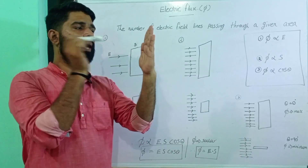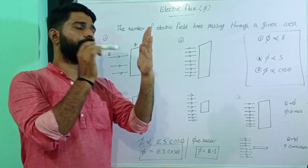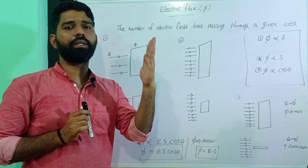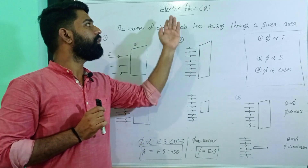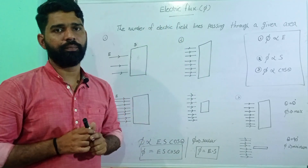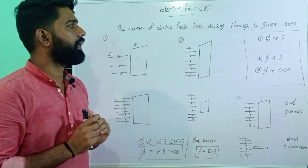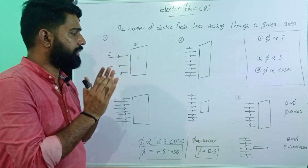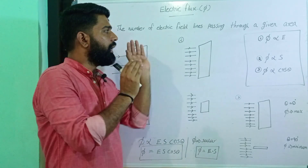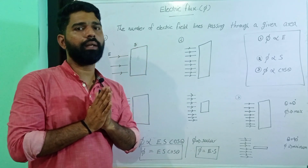We have a total number of electric field lines — we have a flux, electric flux. This is the electric flux. Now let's discuss electric flux. These are the 3 conditions that I have to cover.